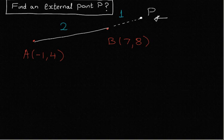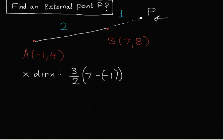So the difference in the x direction between A and B is 7 minus minus 1. And we're going to multiply that by 2 plus 1 all over 2. That will bring us from the point A out to P in the x direction.